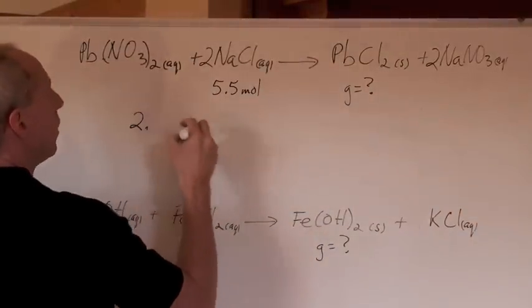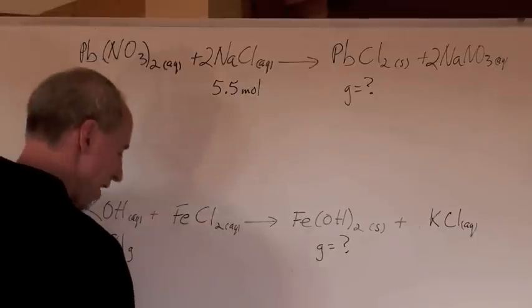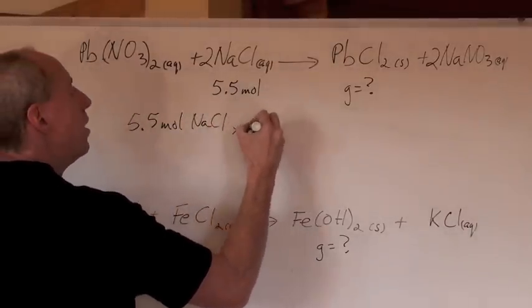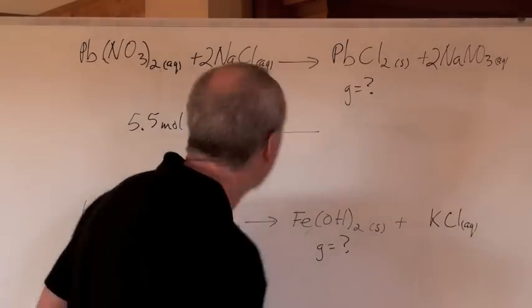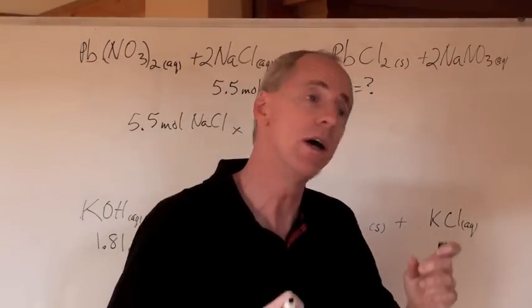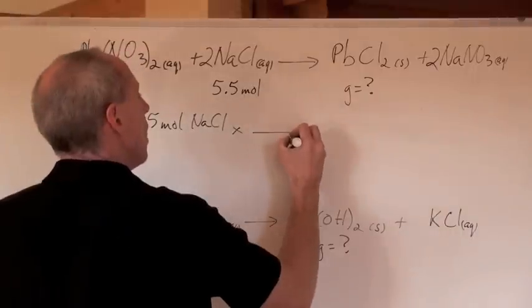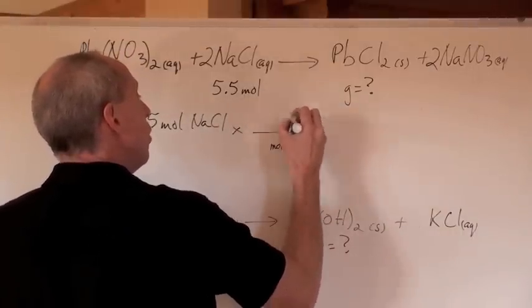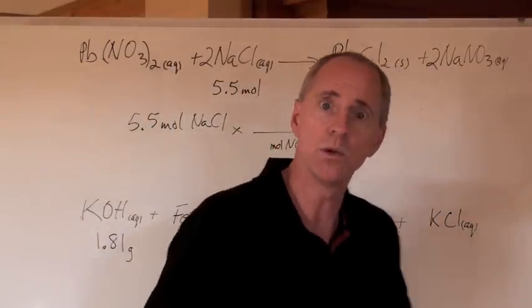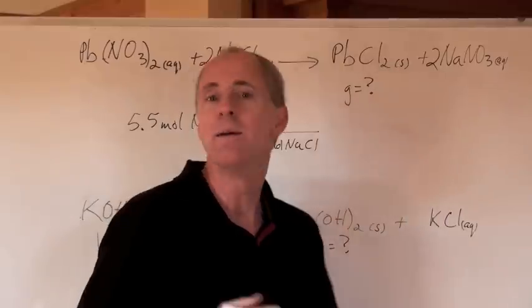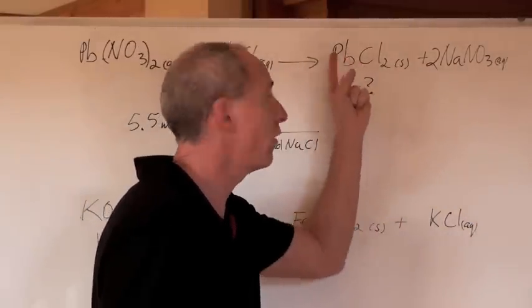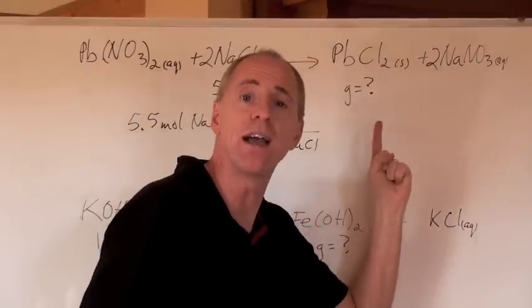We've got 5.5 moles of sodium chloride. We don't want moles of sodium chloride. This equation is in moles, 1 to 2 to 1 to 2, it's the mole ratio. We don't want sodium chloride, NaCl, in terms of its moles. We would like to know how many grams of this can form, but we can't use this information and directly find grams here. We have to find the moles first, and then find the grams.